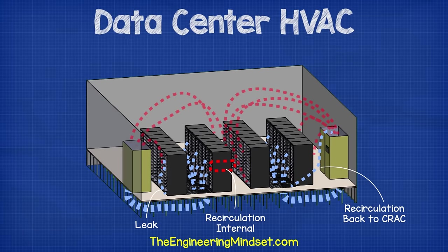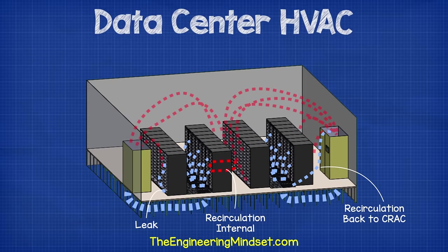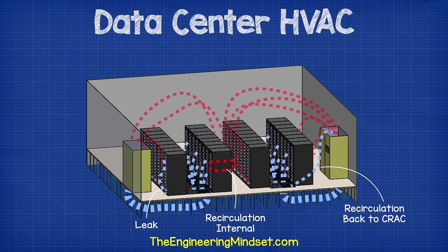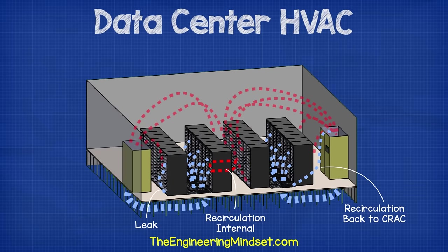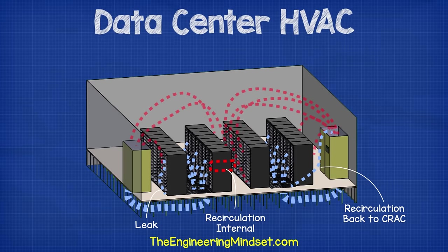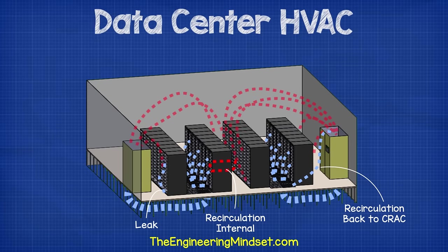This is not perfect however because there will still be some mixing of the hot and cold air streams. Cutouts in the floor can result in air leaks, meaning the cold air can leak straight into the hot aisle. Floor grills which are too close to the CRAC units result in air recirculating straight back to the CRAC unit and will mix with the return air stream. Gaps between the servers can result in air recirculating around inside the server rack — this can easily be solved by installing blanking plates.